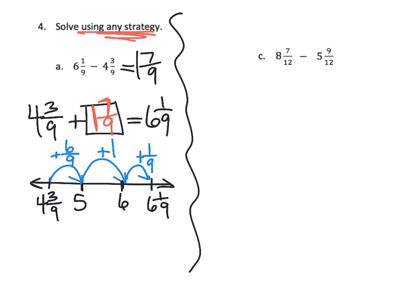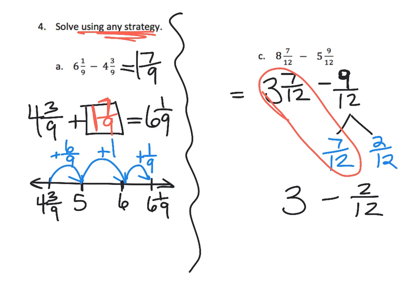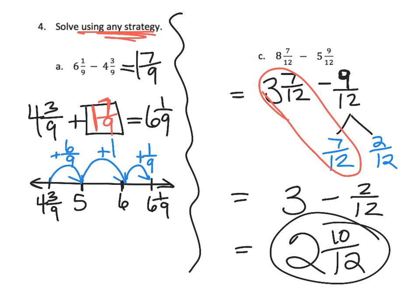Now let's use the decomposition method — decomposing the second fraction. We begin by subtracting the whole numbers: eight and seven-twelfths minus five gives three and seven-twelfths, and we still have nine-twelfths left to subtract. I'm going to decompose that nine-twelfths into seven-twelfths and two-twelfths. Subtracting three and seven-twelfths take away seven-twelfths gives plain old three. Then take away the remaining two-twelfths, and that gives the final answer of two wholes and ten-twelfths.